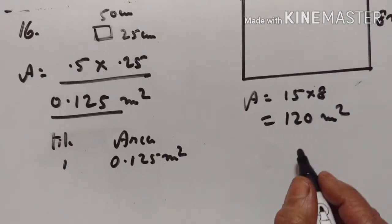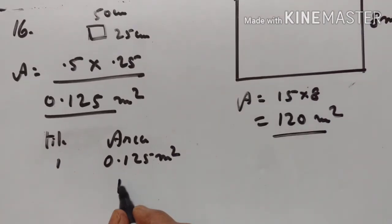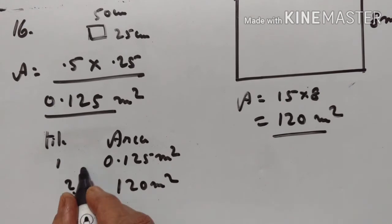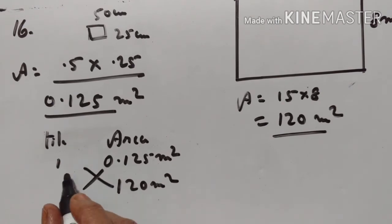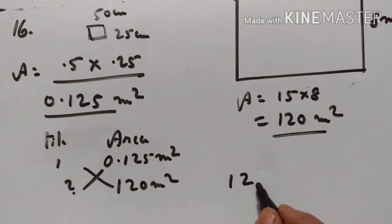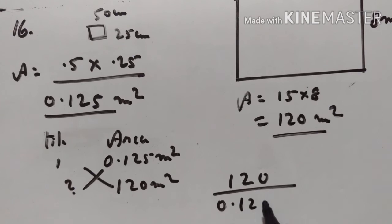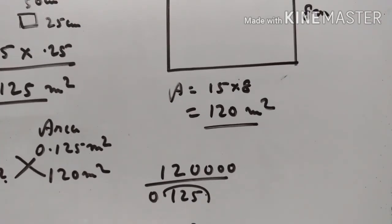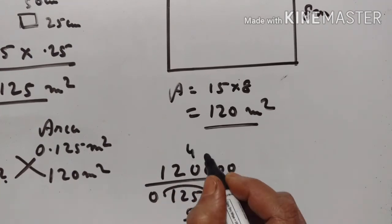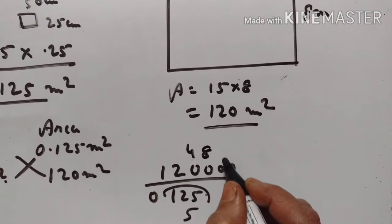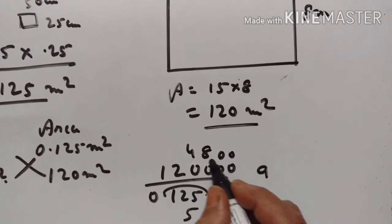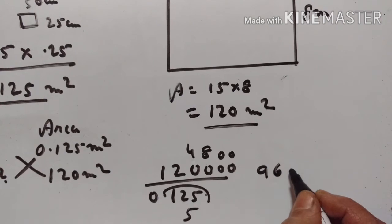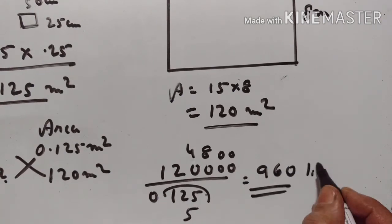So to cover 120 square meters, the number of tiles required is 120 divided by 0.125. Computing this division, 960 tiles are required.